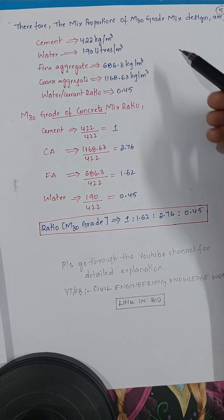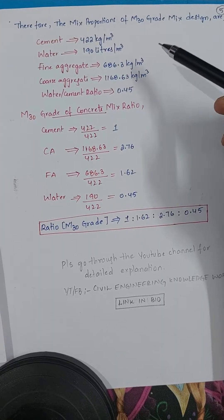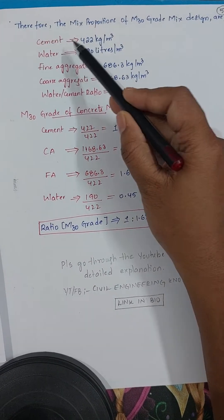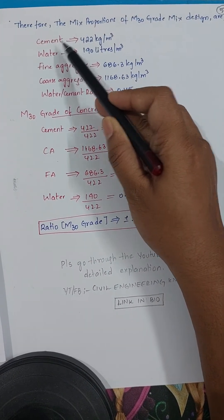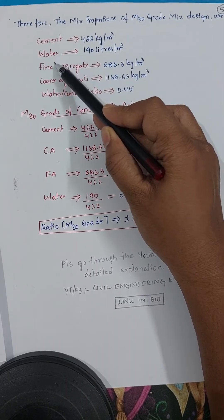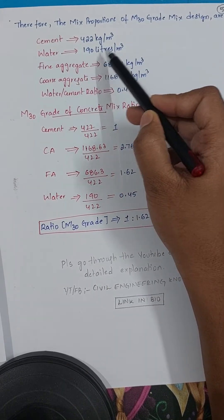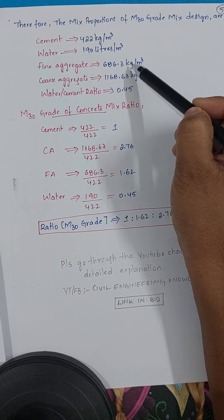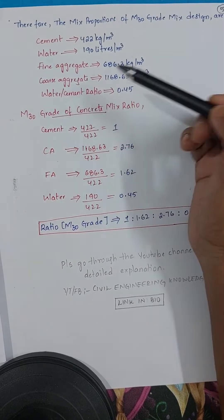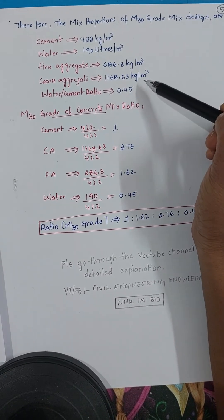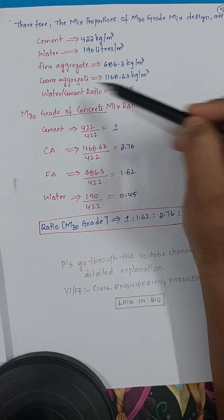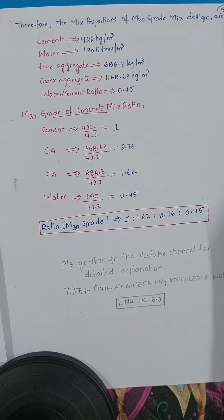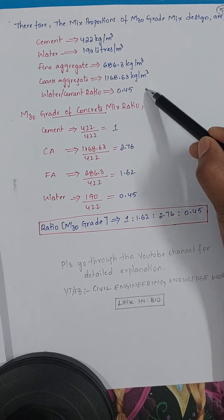Summary of quantities per cubic meter: cement = 422 kg, water = 190 liters, fine aggregate = 686.3 kg, coarse aggregate = 1168.63 kg, and water cement ratio adopted = 0.45.